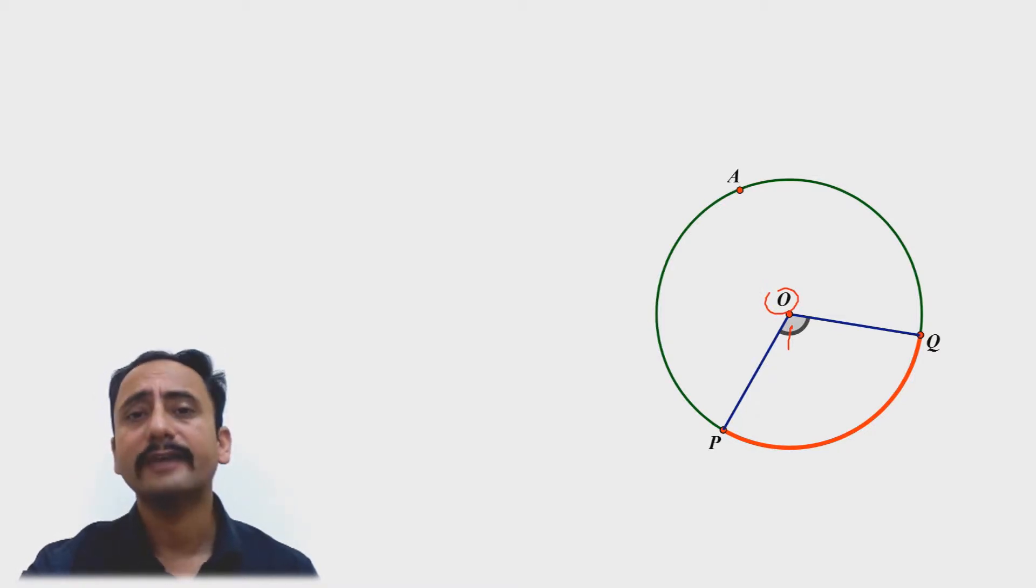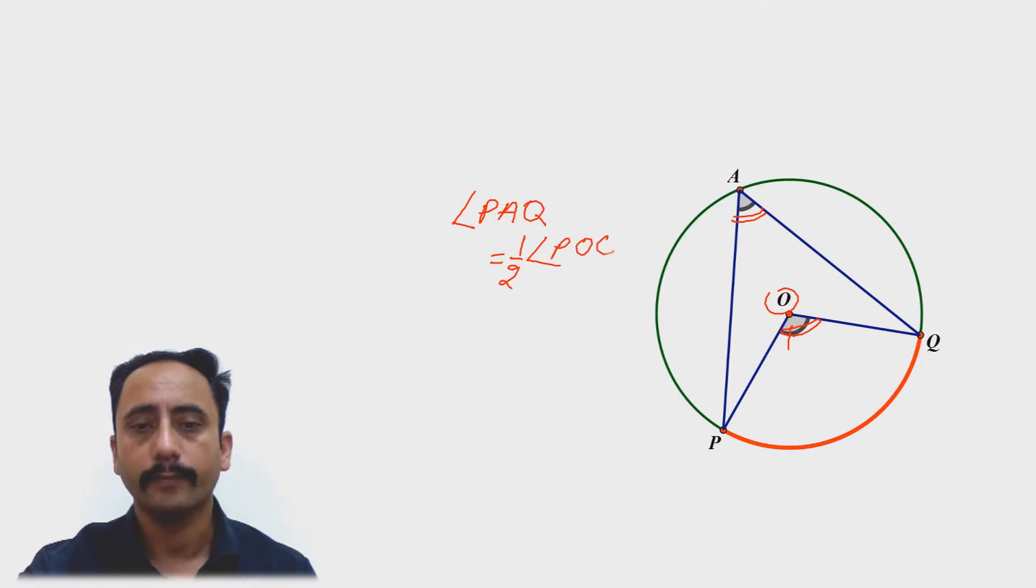Let A be a point which lies in the remaining part of the circle. Then the angle PAQ will have to be half of angle POQ, meaning angle PAQ will be half of angle POQ.